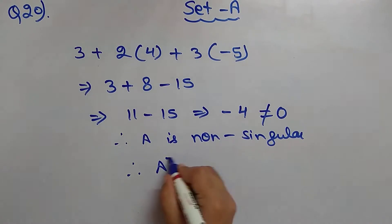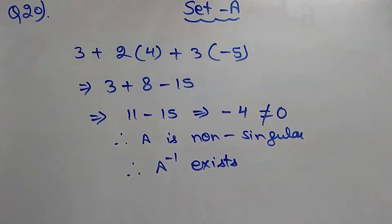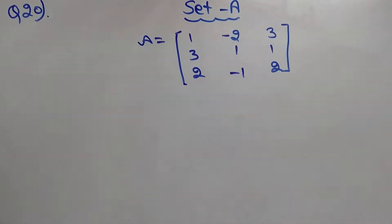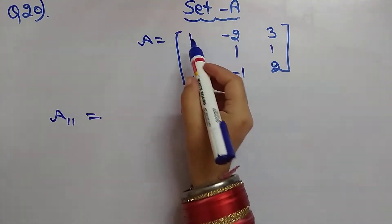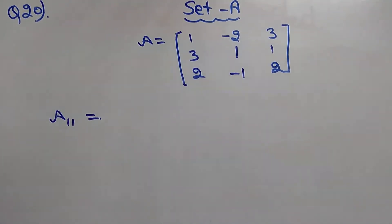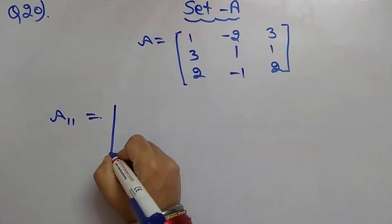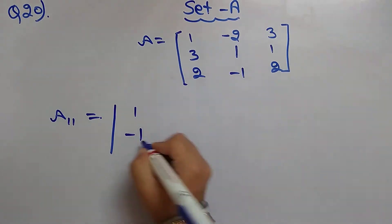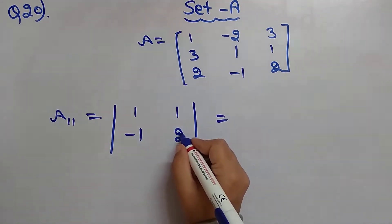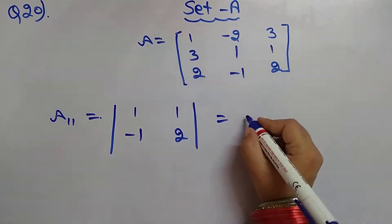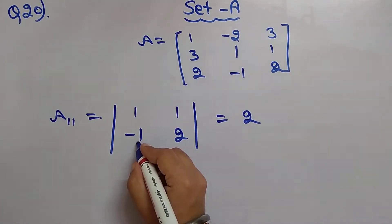Therefore, A inverse exists. We can find the cofactors of A. A11: leaving the first row and first column, the remaining part is [1, -1; 1, 2], so A11 equals 1×2 minus (-1)×1 equals 2 plus 1 equals 3.